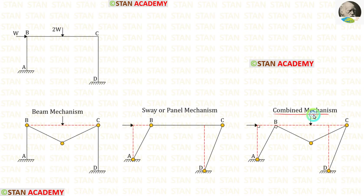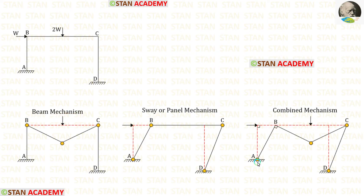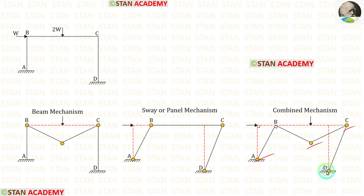Now let us do the combined mechanism. In the combined mechanism, we combine the beam mechanism and the sway mechanism. In the combined mechanism, there will be no plastic hinge at joint B. We will have plastic hinges at fixed end A, under the point load, at joint C, and at fixed end D — a total of four plastic hinges.